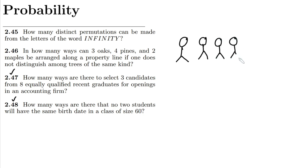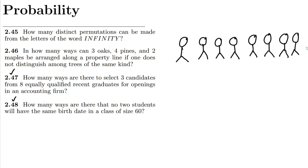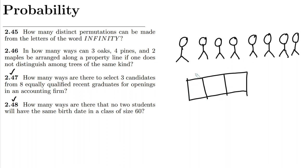So we have these total eight candidates, and from them I have to select three, which can be represented with these three slots. Any one of them can basically occupy them in such a way that there will be no repetition. So how many choices would I have here? Here I will have eight choices.